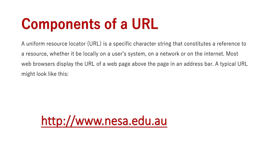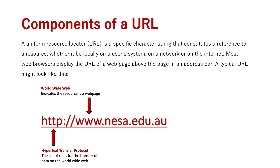A typical URL might look like this. Here is a base website — this is the NESA website, which if you're doing the HSC this year you'll be very familiar with. Firstly there is HTTP, the Hypertext Transfer Protocol, which sets the rules for transmission over the internet. If you're accessing a website, you have to be using the HTTP protocol. The next part is the World Wide Web — 'www' — which indicates that the source is a website. All websites start with www. Then we get into the parts specific to the website.